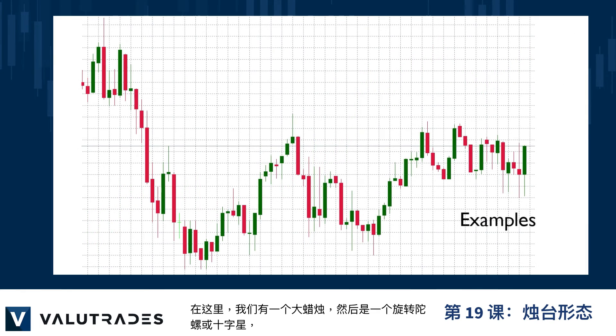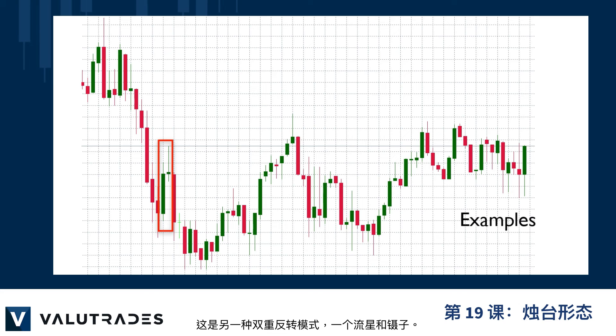And a long candle plus a doji. Here we have a large candle followed by a spinning top or doji, which is another dual reversal pattern. A shooting star. And tweezers.